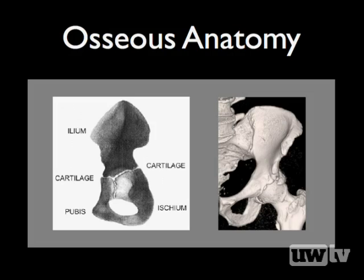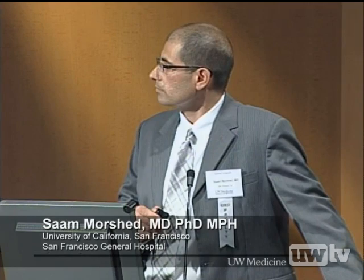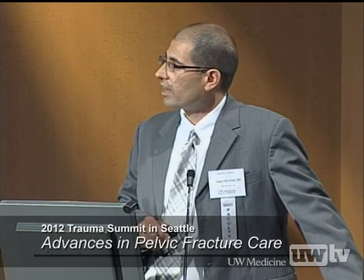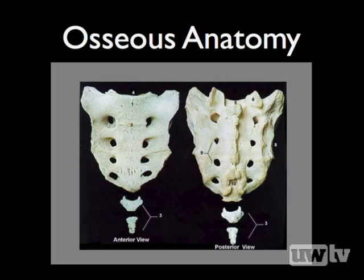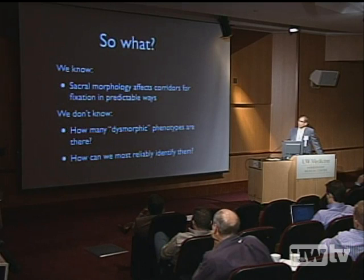Regarding osseous anatomy: the innominate bone comprises three bones — the ilium, pubic bone, and ischium — which fuse between 11 and 13 years of age. The sacrum is a triangular-shaped bone of 4 to 5 fused segments. Ossification begins at age one and fusion occurs between age 18 and 30, depending on the individual. The degree of fusion appears related to weight bearing.